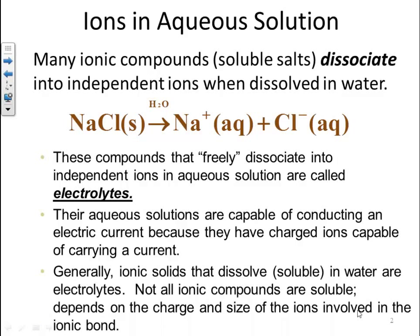Generally, ionic solids that are dissolved, meaning soluble, in water are electrolytes. Not all ionic compounds are soluble — it depends on the charge and size of the ions involved in the ionic bond. We have some rules to help decide this that we'll talk about later.